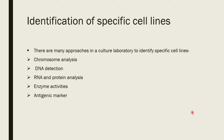For the identification of a specific cell line, we can carry out chromosome analysis, DNA detection, RNA and protein analysis, and determine enzyme activities. Antigenic markers can also be used. DNA detection can be done by Southern blotting, RNA and protein analysis by Northern blotting, and protein analysis by techniques like SDS-PAGE. Enzyme activities can be determined by utilization of a specific substrate. Various types of antigenic markers, such as tetracycline markers, are available to determine specific cell lines.